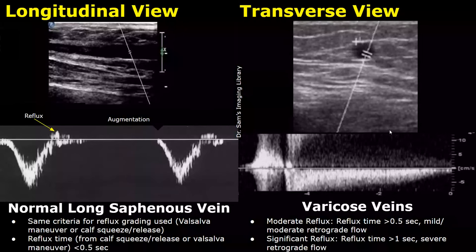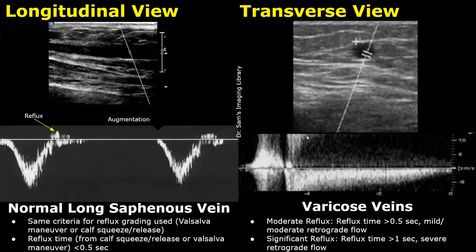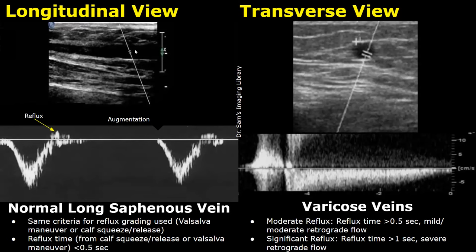Varicose veins can cause blood flow reflux in the long saphenous vein. This reflux can be seen using Doppler. It can be seen using color Doppler, but color Doppler evaluation can cause errors, so it is best assessed with spectral Doppler. Augmentation, which consists of calf squeeze and release, can be used. A Valsalva maneuver can also be used to evaluate venous reflux.